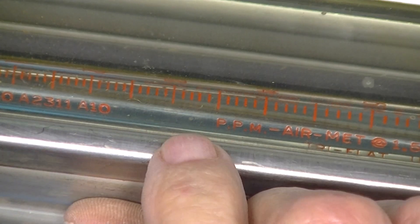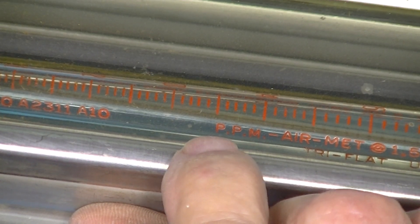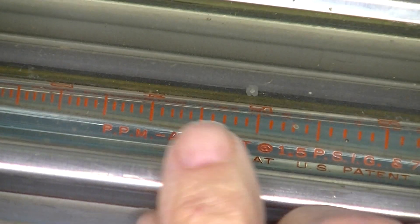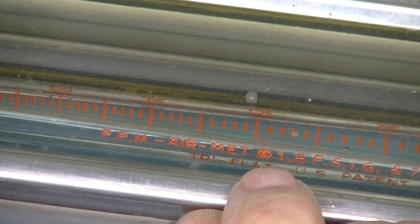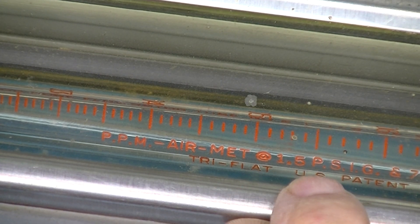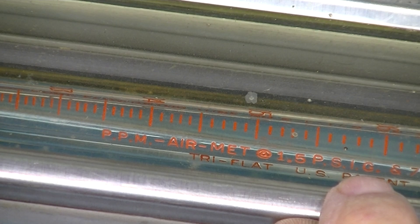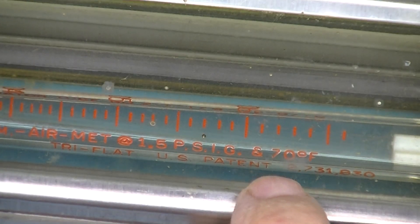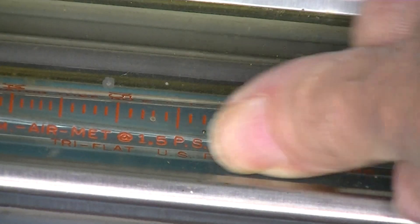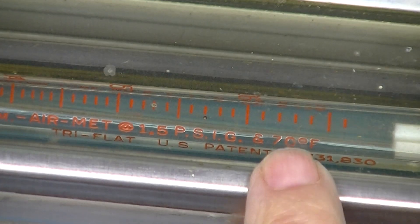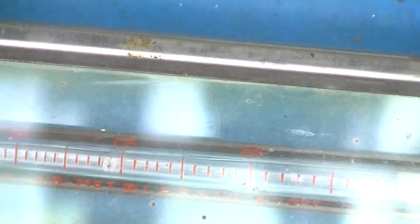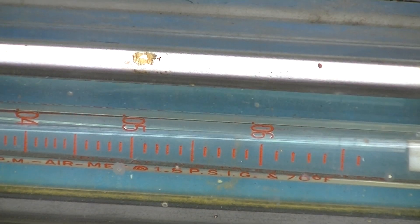We're looking at pounds per minute, interesting concept, pounds per minute of air at 1.5 psi. So it's not standard conditions. 1.5 psig, which is gauge, at seventy Fahrenheit. So although the temperature is standard, the pressure is one and a half pounds.